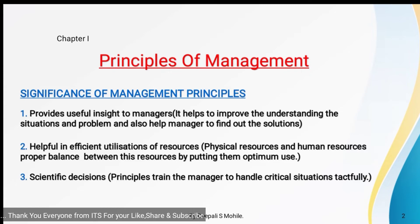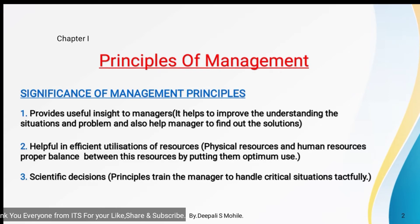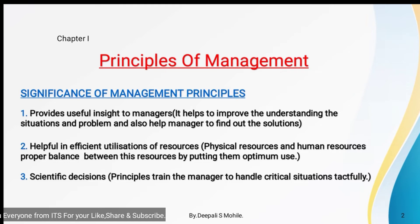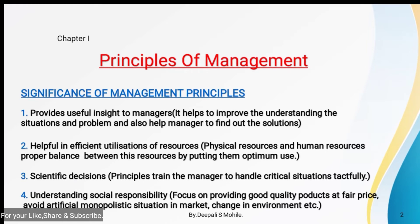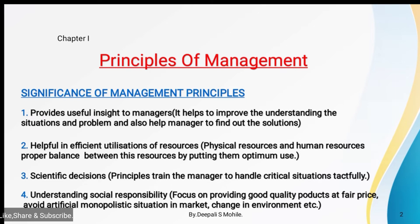Management principles help managers apply scientific rules and regulations. Scientifically, they can conduct experiments, research, and observation — these are all scientific methods. Managers can implement scientific rules, theories, observation, research, and experiments to solve problems. Therefore, the third point is that management principles are helpful for scientific decisions. Point number 4 is understanding the social responsibility. Business is not only about profit; along with profit, there are other aims, including consumer satisfaction and social responsibility.